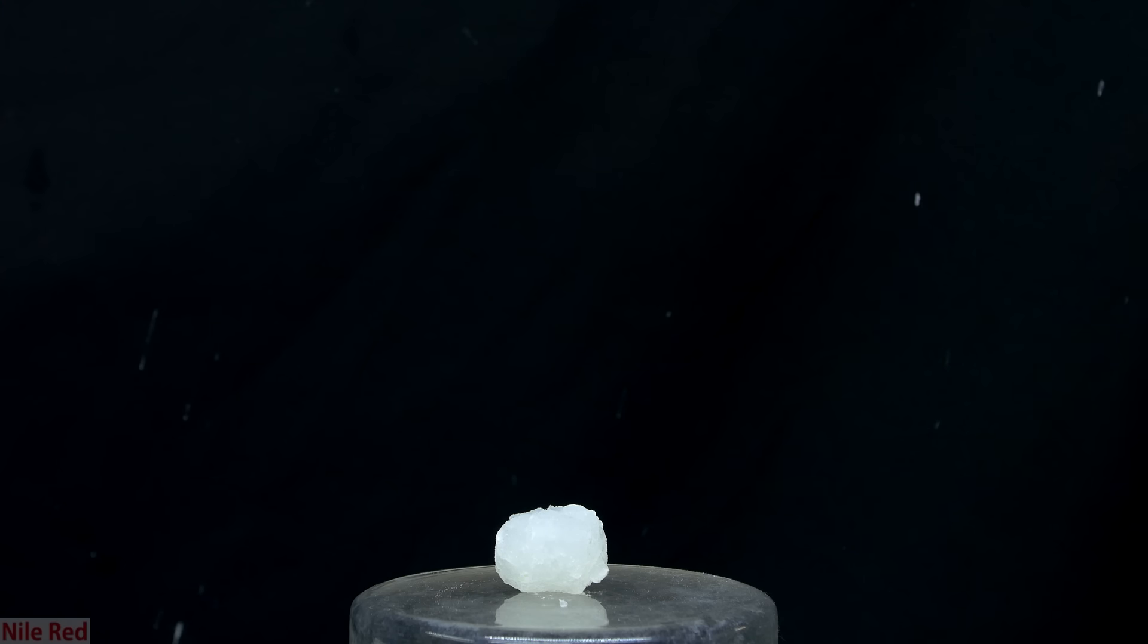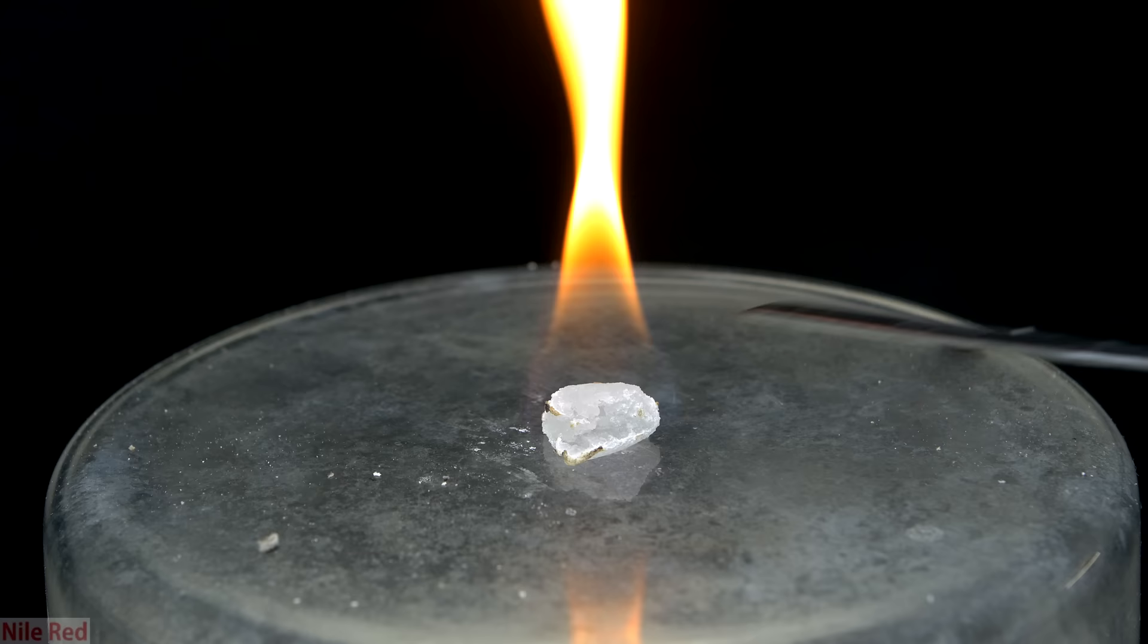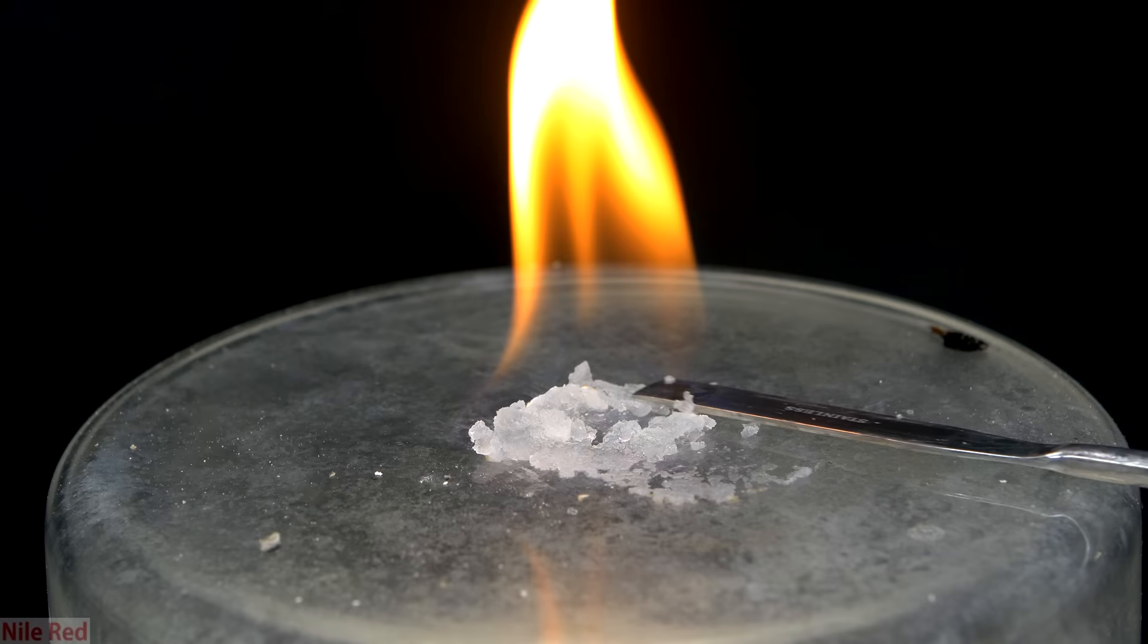Jellied alcohol is the semi-solid combination of an alcohol with calcium acetate. When the liquid alcohol is combined with the solid calcium acetate, it forms a semi-solid jelly-like substance.